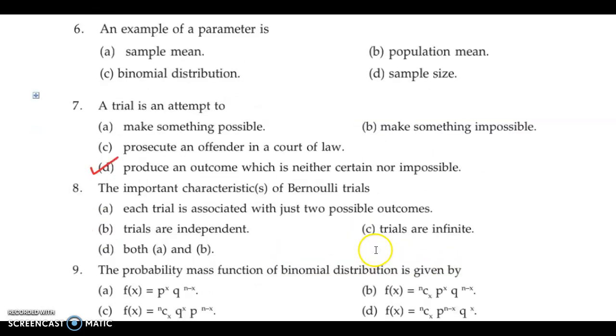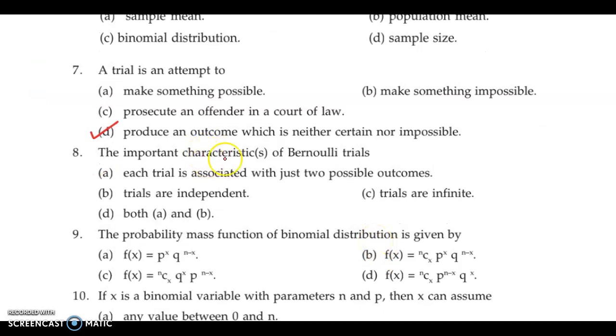Question number 8. An important characteristic of Bernoulli's trials is. Each trial is associated with just two possible outcomes, that is success and failure. So this is correct. Trials are independent. This is also true. Trials are infinite. This one is a false statement. So the correct answer is both A and B which is option D.